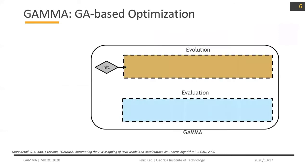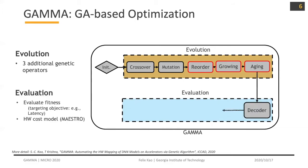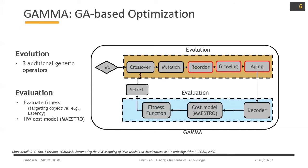Now let's look at how Gamma works. Gamma is a GA-based algorithm, so it includes an evolution part and an evaluation part. In the evolution part, in addition to the crossover and mutation that general GA has, we have three additional genetic operators: reorder, growing, and aging. In the evaluation part, to evaluate hardware fitness, we have the hardware cost model of Maestro embedded. More details are in the paper.